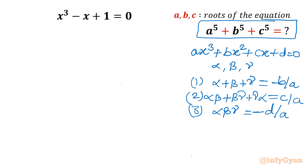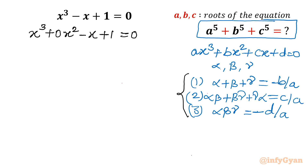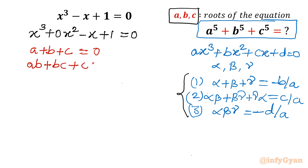Now I will apply Vieta's method to our equation, which I write as x³ + 0x² - x + 1 = 0, with A, B, C as the roots. Equation 1: A + B + C = 0 (coefficient of x² is 0). Equation 2: AB + BC + CA = -1/1 = -1 (coefficient of x is -1).